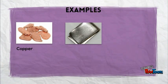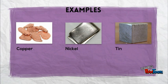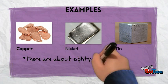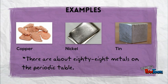Examples of metals include copper, nickel, and tin. There are about 88 metals on the periodic table. This also depends on which periodic table sheet you use.